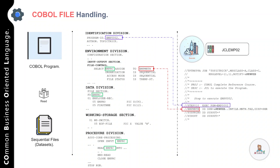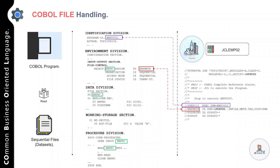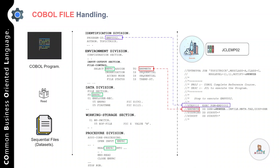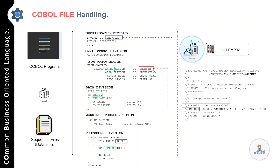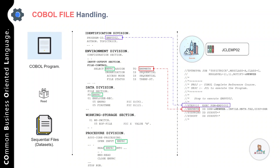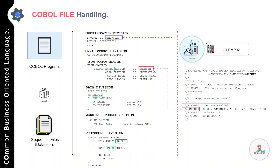Coming back to the sample JCL: the first two lines are basically a job card, followed by a description of the job and the step. Step 10 specifies the program you want to execute with the help of this JCL, and thereafter we have specified the DD name that we used in our COBOL program. This is how you use a JCL to run your COBOL program on the mainframe.